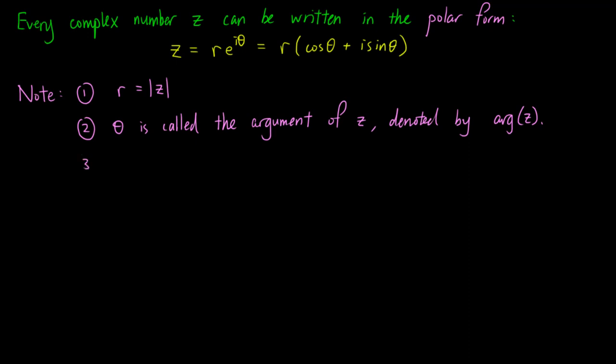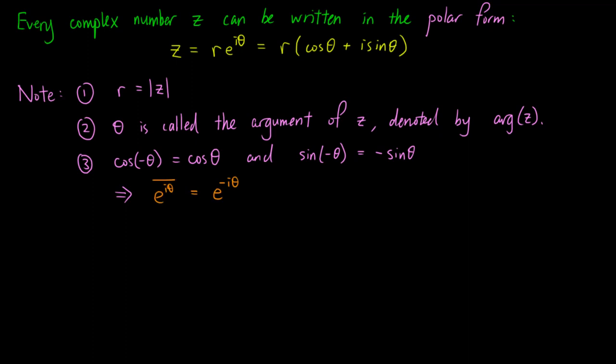Also, since cos(−θ) equals cos θ, and sin(−θ) equals negative sin θ, we have that the complex conjugate of e to the iθ equals e to the negative iθ.